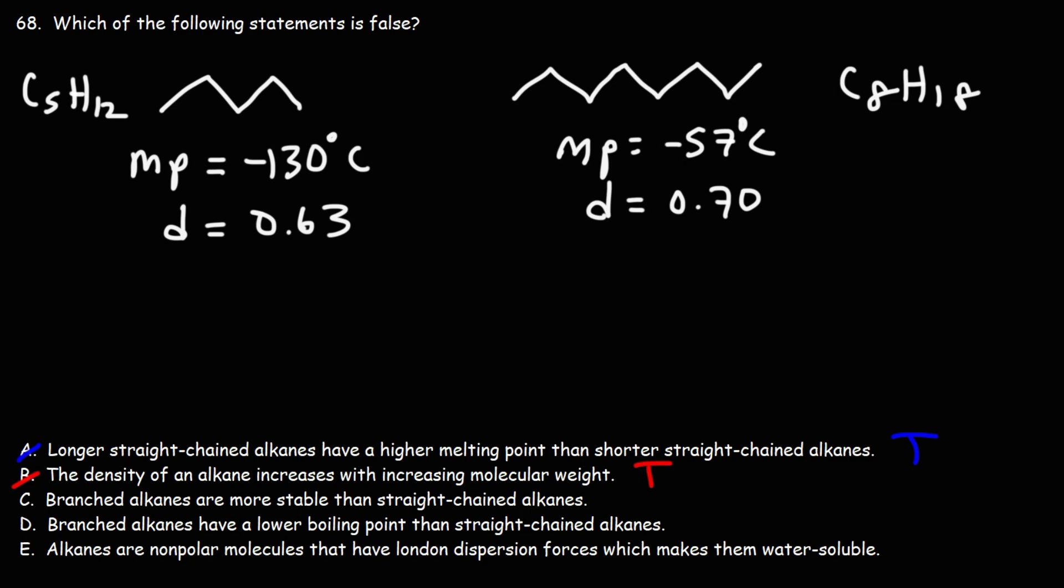What about answer choice C? Branched alkanes are more stable than straight-chain alkanes. Is that true or false?